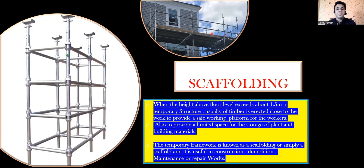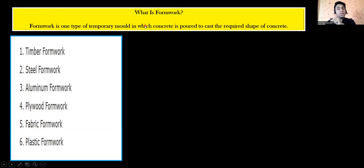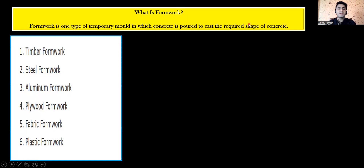Next, what is formwork? Formwork is a general term — it is a type of temporary mold into which concrete is poured to cast the required shape. For example, if I want to cast a rectangular footing, I keep the formwork to get that shape. Once the footing or column is cast, after 24 to 48 hours we de-shutter and remove it. Types of formwork include timber formwork, steel formwork, aluminium formwork, plywood, fab deck, and plastic.